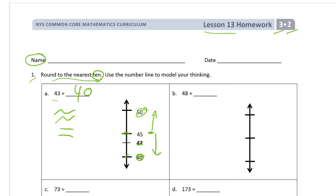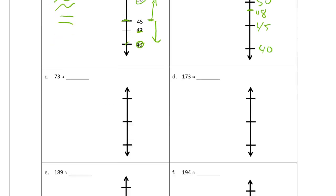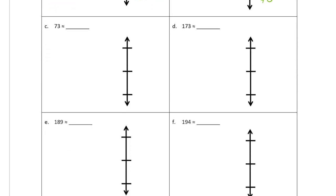Now we have to label these number lines. 48 is going to be between 40 and 50, and right in the middle is 45. Since 48 is closer to 50, it rounds to 50. Now we have 73 — it's between 70 and 80, right in the middle is 75, and 73 is just below 75, so it's closer to 70. 73 is about 70.